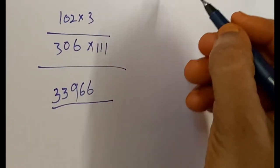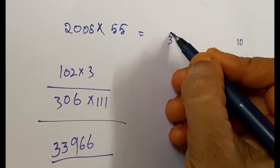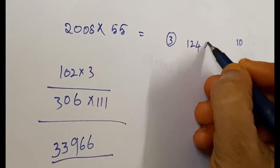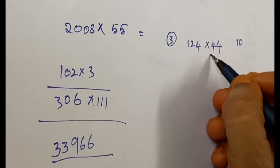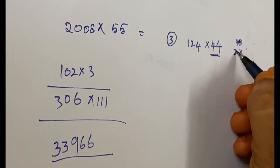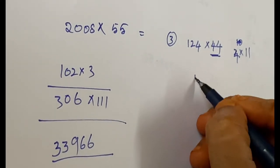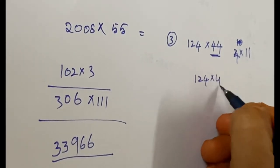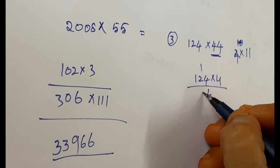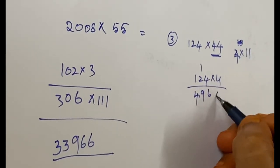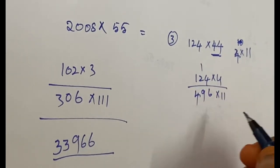So we are taking the third example: 124 into 44. So here, 44 we can write it as 4 into 11. So 124 into 4: 16, 8, 4 into 11.